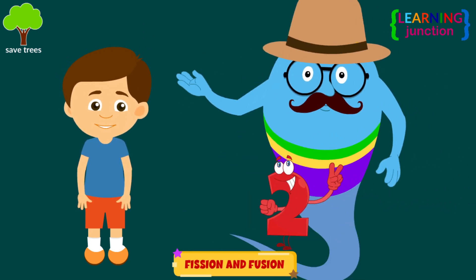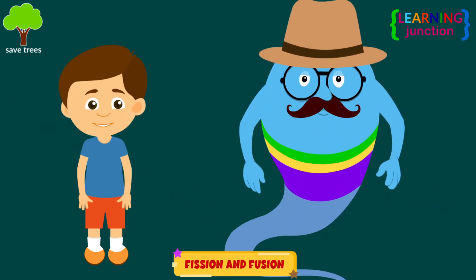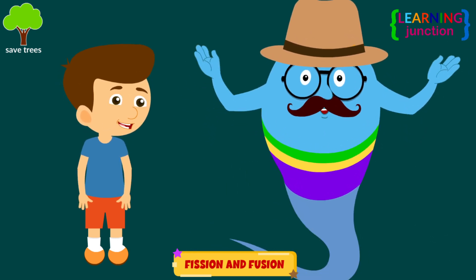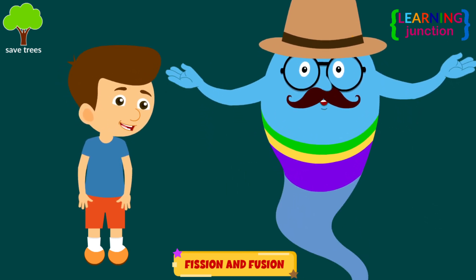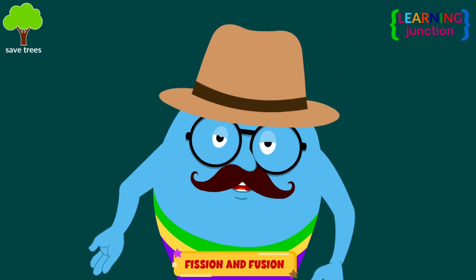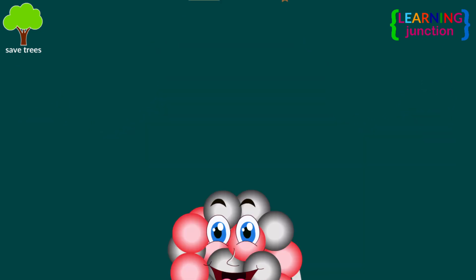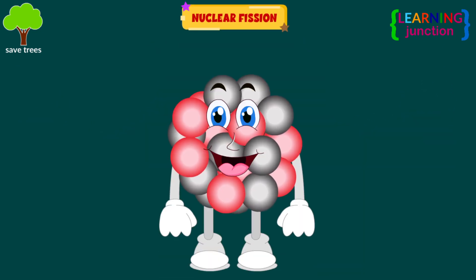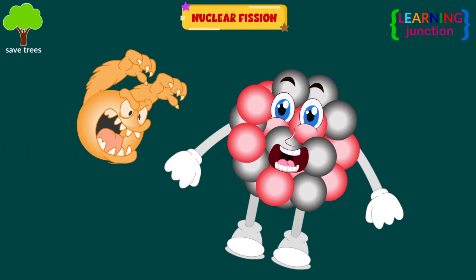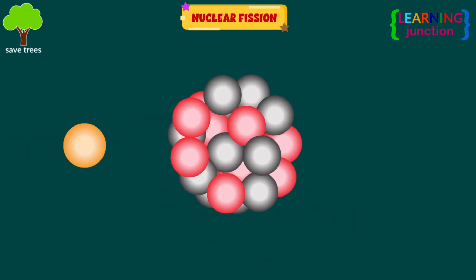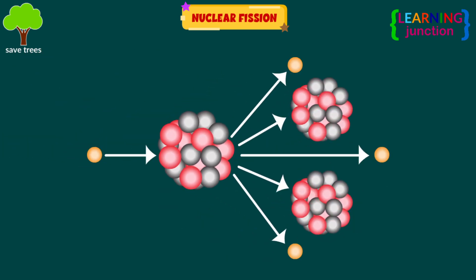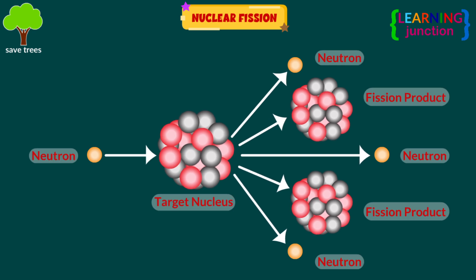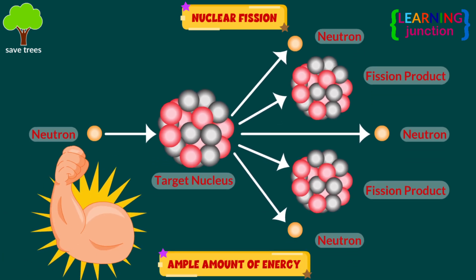Fission and fusion are two physical processes that produce massive amounts of energy from atoms. We will learn about these one by one. Nuclear fission is a nuclear reaction in which the nucleus of an atom is bombarded with low-energy neutrons, which splits the nucleus into smaller nuclei. An ample amount of energy is discharged in this process.